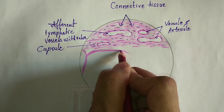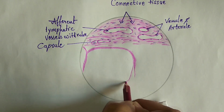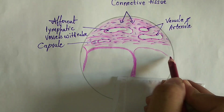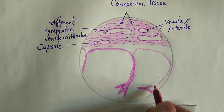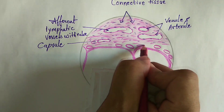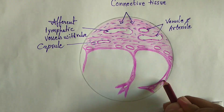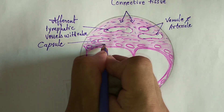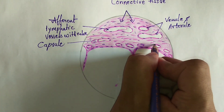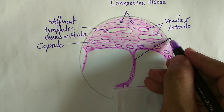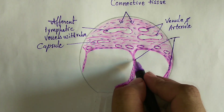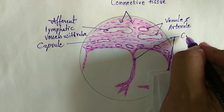Here we are making the structure of connective tissue trabeculae. Connective tissue trabeculae is also a key point to identify the lymph node. It arises from the inner surface of the capsule and contains numerous blood vessels associated with the connective tissue trabeculae, which you can see here.